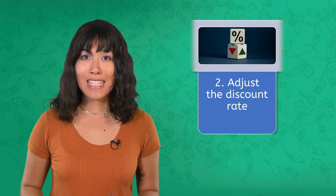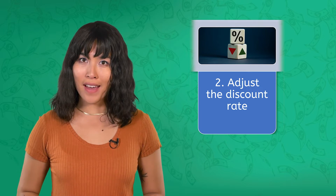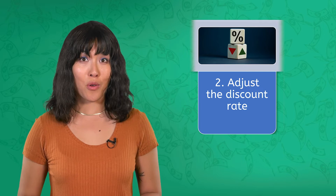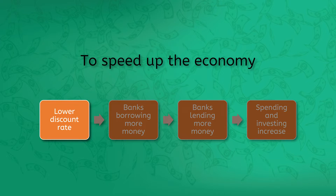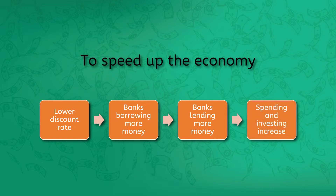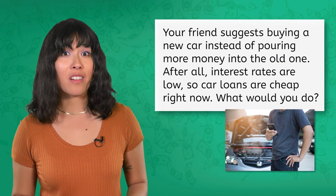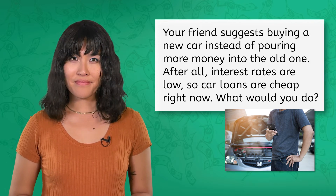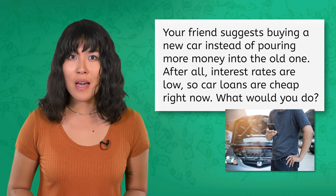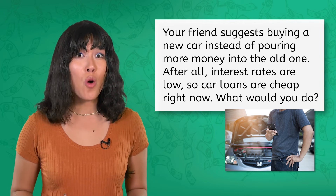The second tool is adjusting the discount rate — the interest rate at which banks borrow from the Fed — and changes in this rate get passed along to individual borrowers as well. To increase supply and speed up, the Fed can lower the rate, making borrowing cheaper. This encourages banks to borrow and lend to consumers and businesses, leading to increased spending and investment. For example, if interest rates are low, you're more likely to take out a car loan. Likewise, businesses are more inclined to borrow for expansion, leading to more investments and job creation.